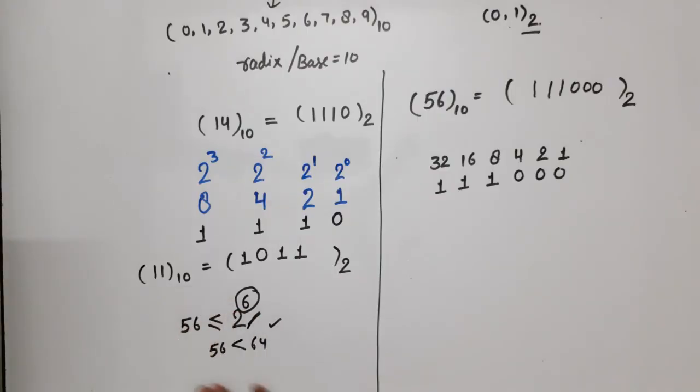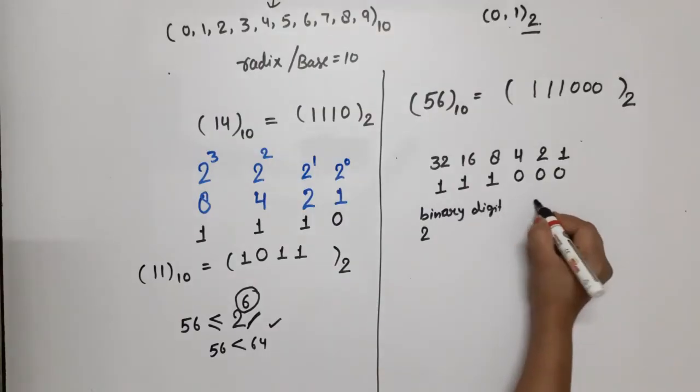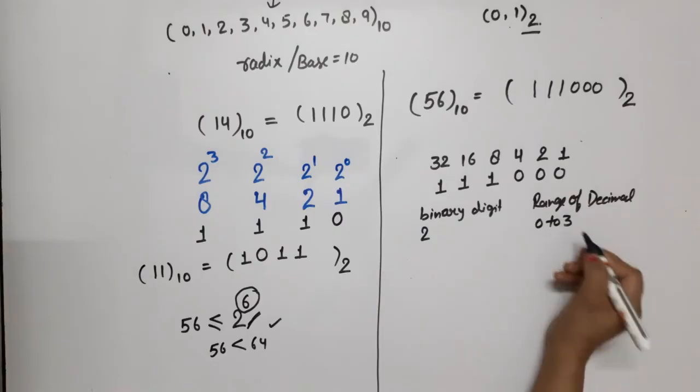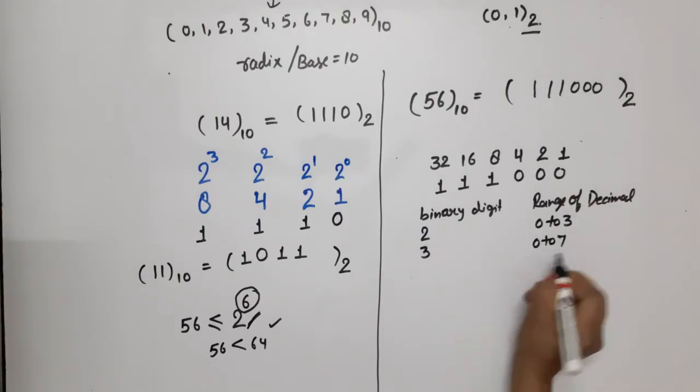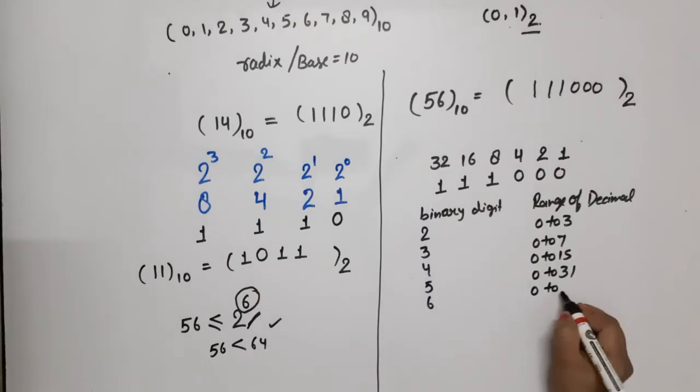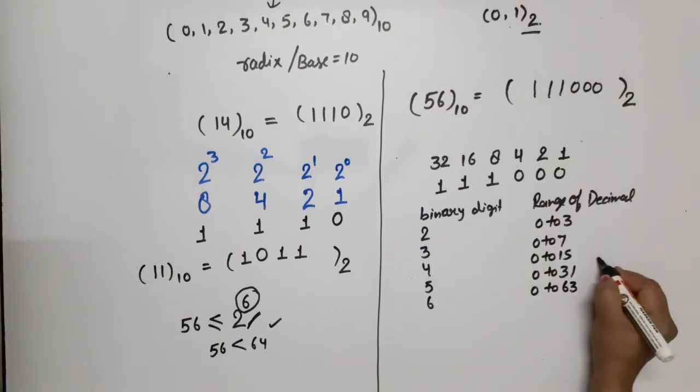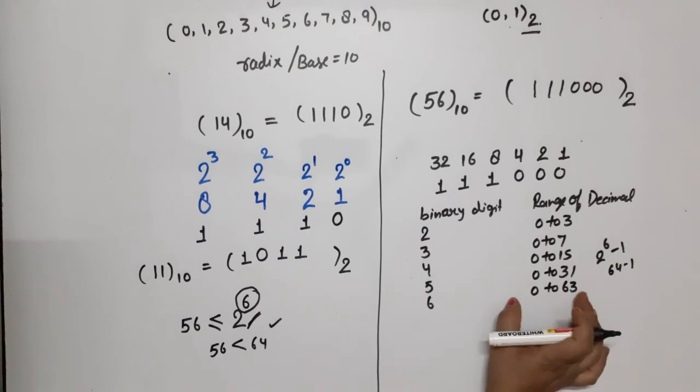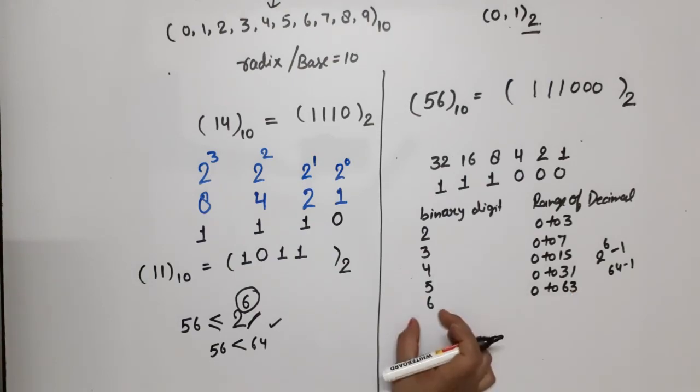I will tell you another thing. If you are using binary digits, the range of decimal numbers will be: with 2 digits, 0 to 3; with 3 digits, 0 to 7; with 4 digits, 0 to 15; with 5 digits, 0 to 31; with 6 digits, 0 to 63. How do I get this range? It's simple - you take 2 raised to power n minus 1. For 6 bits, that's 64 minus 1, which is 63. If there is any number in this range, 6 bits will be required. Either you have the division method or do this - this is the easiest way.